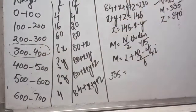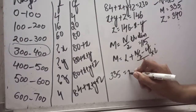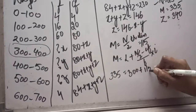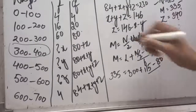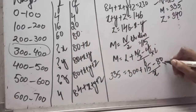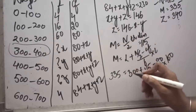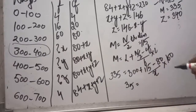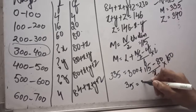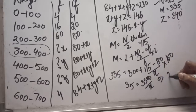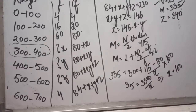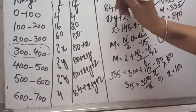The median lies in the 300 to 400 class interval, so lower limit is 300. Applying the formula: 300 plus (115 minus 80) divided by x, multiplied by 100. Solving: 335 minus 300 equals 35, which equals 3500 divided by x. From here x comes out to be 100. We have calculated our first answer: x equals 100.